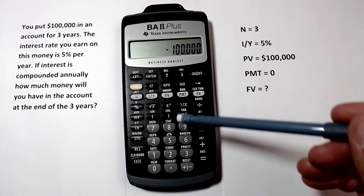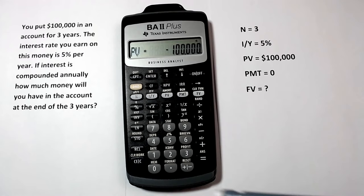There is no payment in this problem, so the payment is zero. Now, we want to calculate the future value because we want to know how much money we'll have at the end of this three year period. So we'll press the CPT button for compute, then FV for future value. And here we have $115,762.50 as our future value.